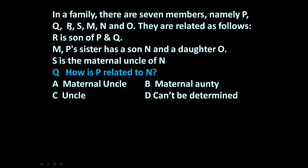...P, Q, R, S, M, N, and O. They are related as follows: R is son of P and Q. M, P's sister, has a son N and a daughter O. S is the maternal uncle of N. How is P related to N?